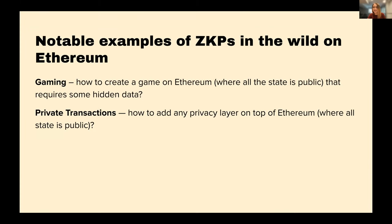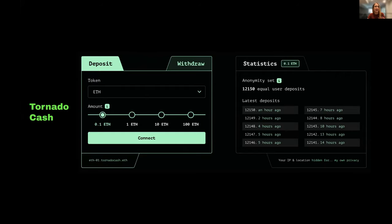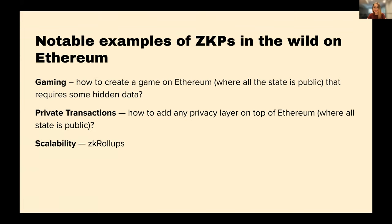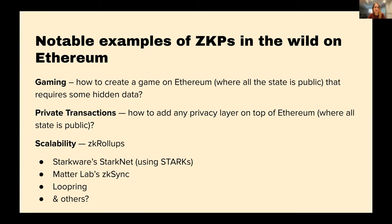The other category is private transactions. Again, Ethereum has everything out in the public — so if you want a privacy layer, zero knowledge proofs come to the rescue. A notable example is Tornado Cash, a privacy layer on top of Ethereum where you can mix your coins with somebody else's using zero knowledge proofs. And then there's scalability, which is a theme for today. There are many ZK projects: StarkWare with StarkNet uses STARKs; Matter Labs with zkSync; Loopring — and many more were mentioned earlier.